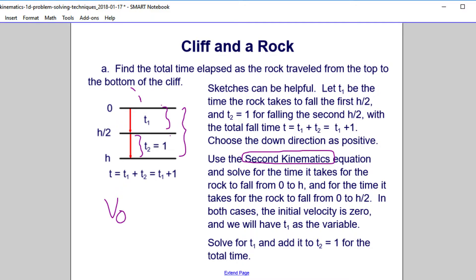But if we start both conditions at the top, right, for this one here where you fall half the way, and this one here where you fall the whole way, in both cases the initial velocity is 0. So that will take out our t, the linear part of t, the v0 t from our second kinematics equation. So once we do that, we can solve for t1, and then all we have to do is add it to t2 for the total time.